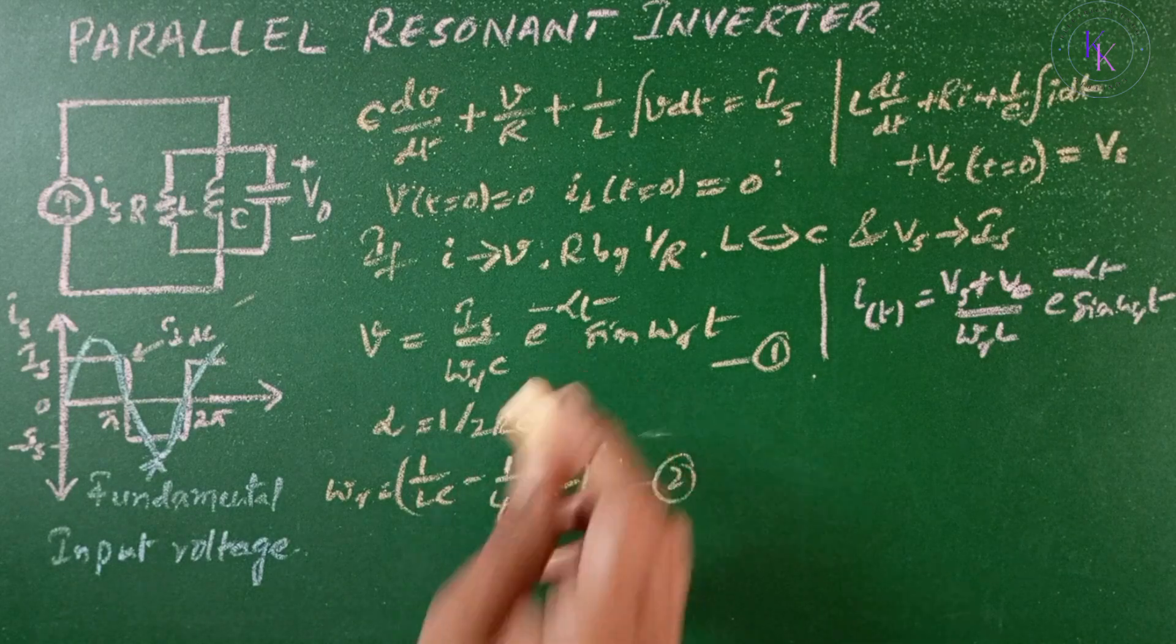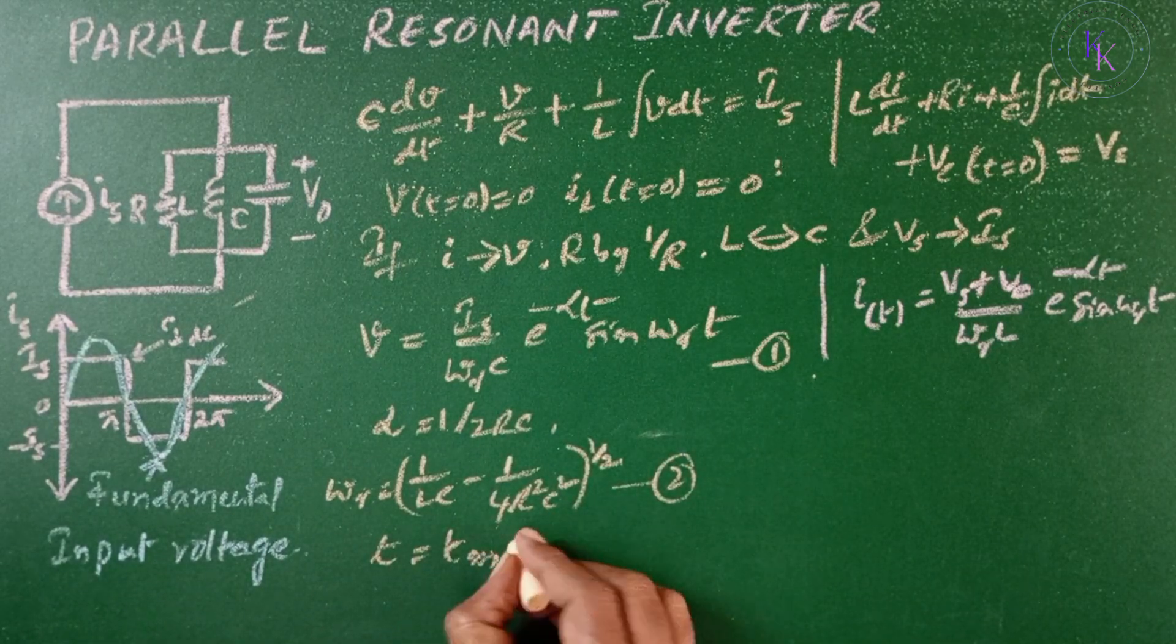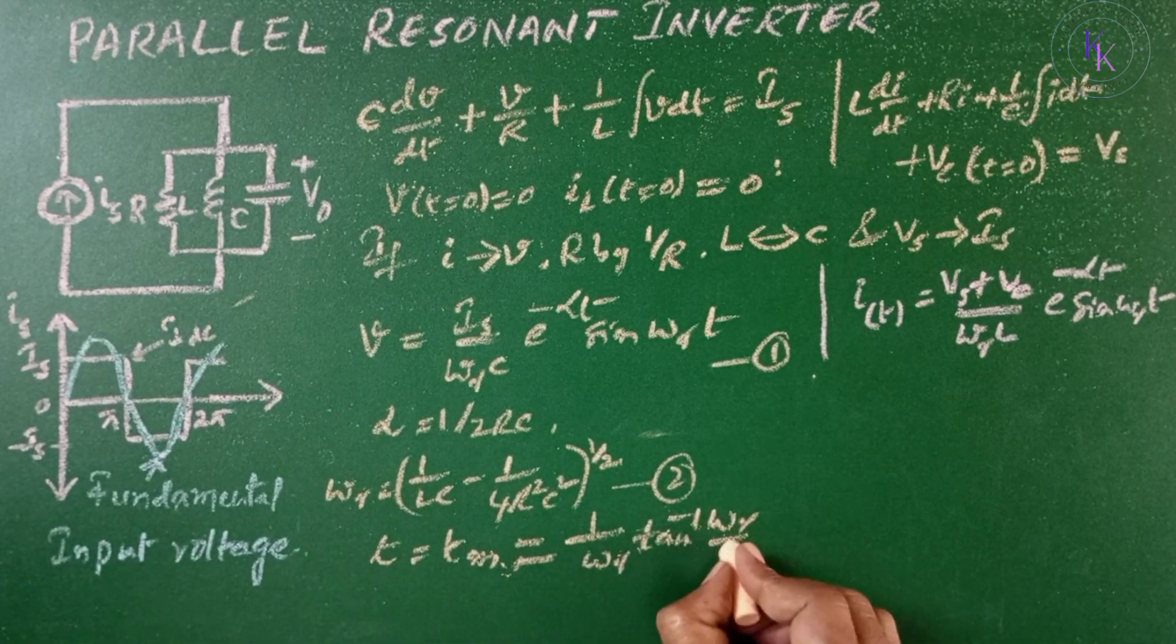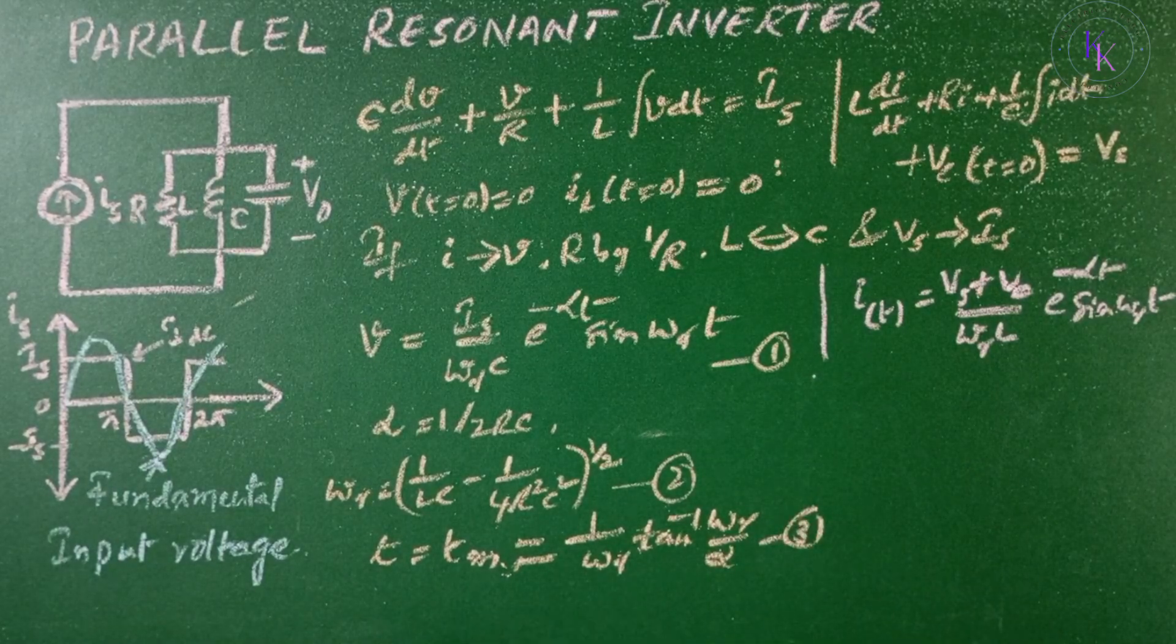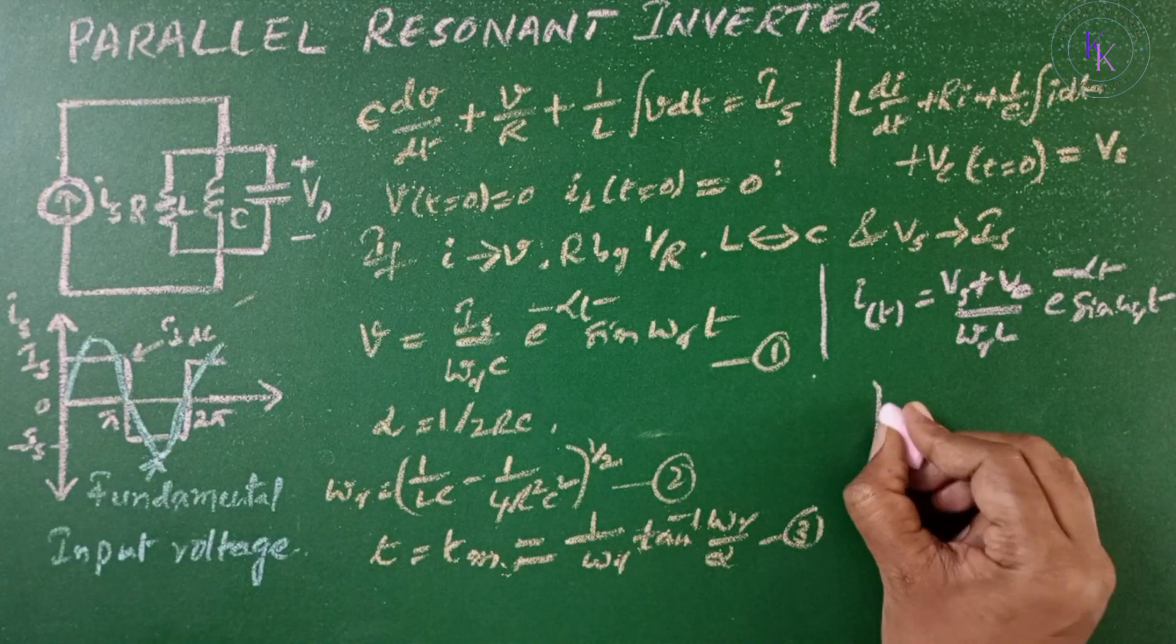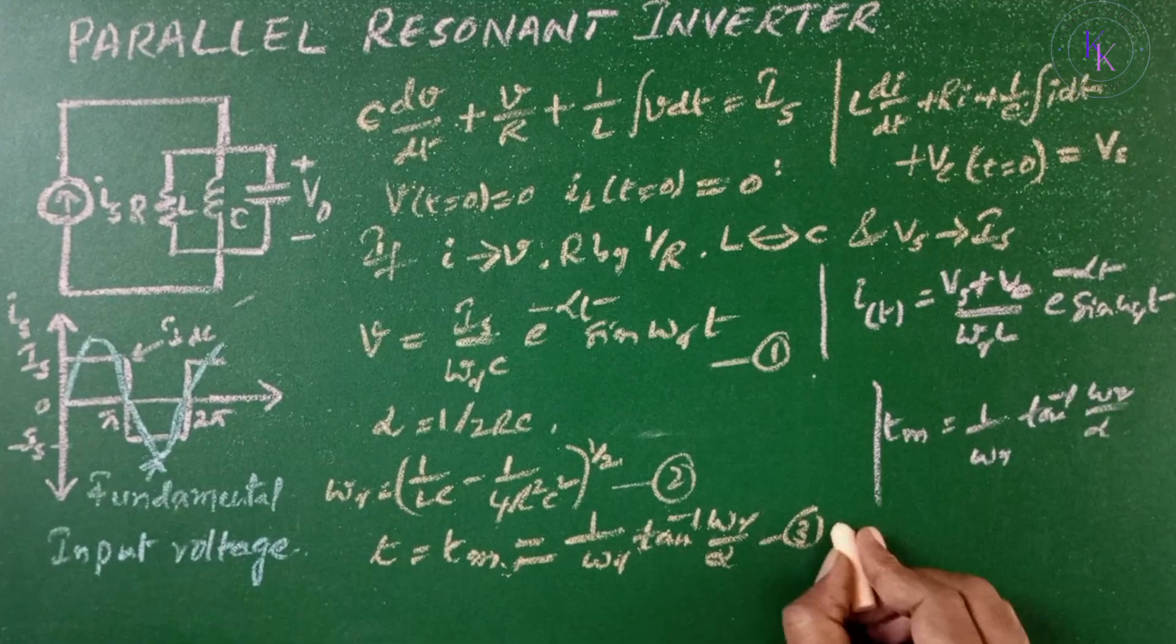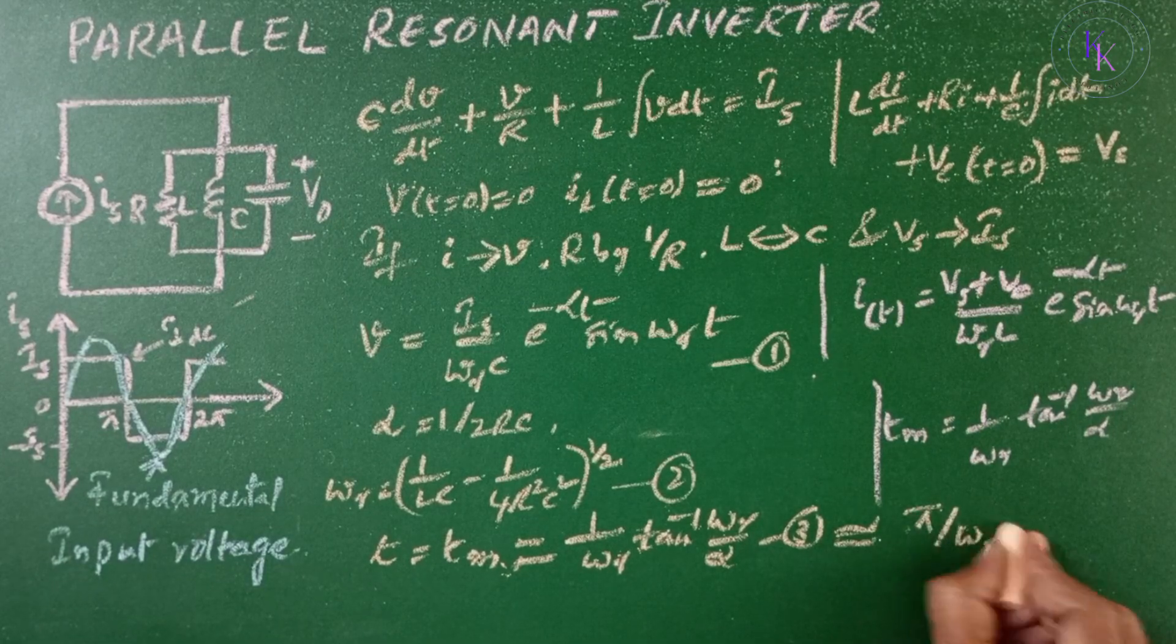The voltage V is maximum at T = Tm, where Tm is given by (1/ωR)tan⁻¹(ωR/α), equation 3. This is also seen in series resonant inverter, where Tm equals the same (1/ωR)tan⁻¹(ωR/α). This can be approximated to π/ωR.